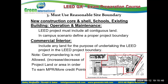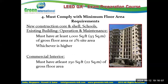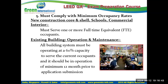The LEED project must include all contiguous land. Gerrymandering — increasing or decreasing the project land area to gain MPR or credit points — is not allowed. For minimum floor area requirement (FAR): all project types except commercial interior must have at least 1,000 square feet of gross floor area or 2% of site area, whichever is higher. For commercial interior, the minimum is 250 square feet.